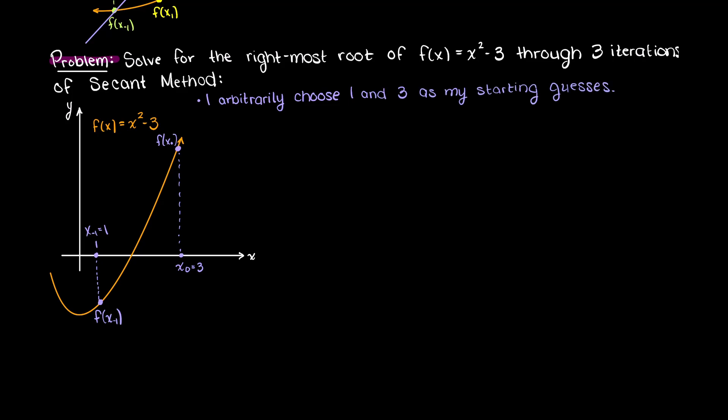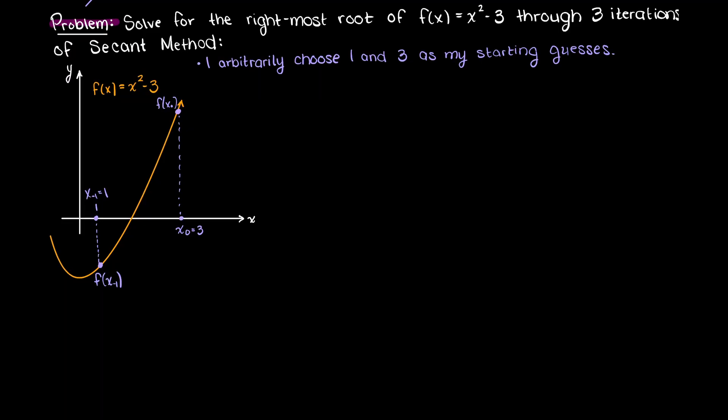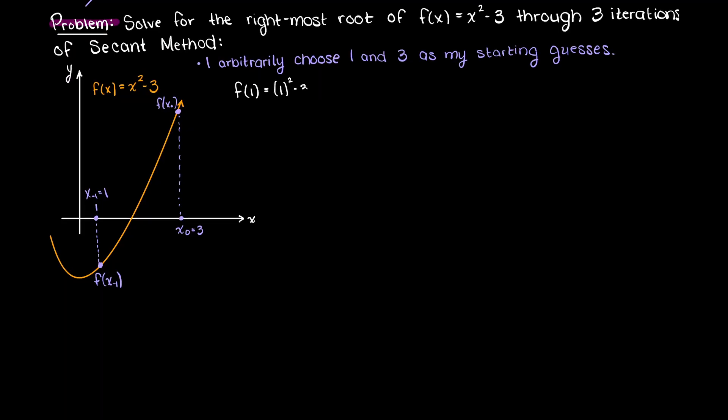In the previous video we derived the following formula to find our next iteration of x. So, firstly, to solve this problem we need to evaluate two initial x guesses, which results in -2 and 6 as you can see here.